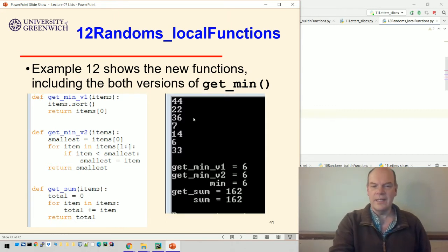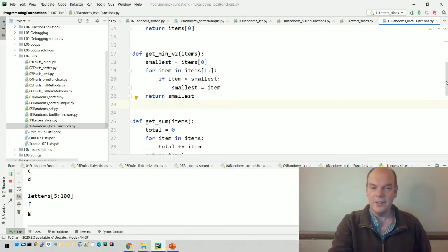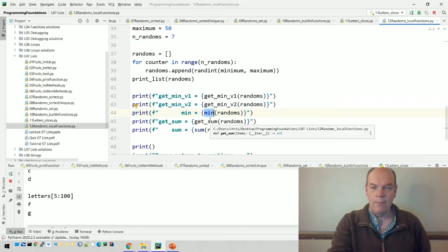So there's the list. If we use get min version one, get min version two, they should both produce the same thing or just the regular min built-in function will give you six. And get sum and sum should give you the same value. So we're just checking that our functions get min version one and two and min and get sum and sum producing the same results.